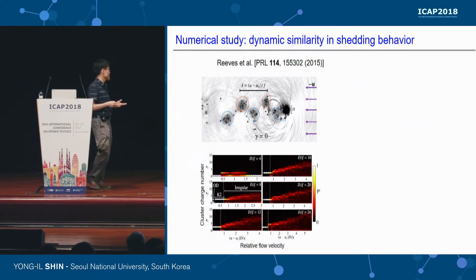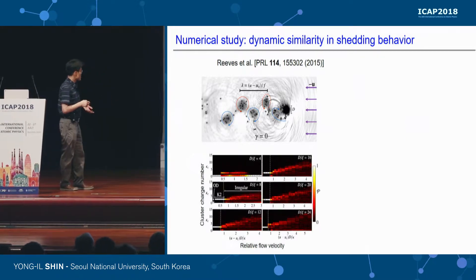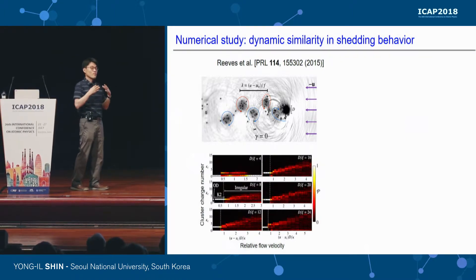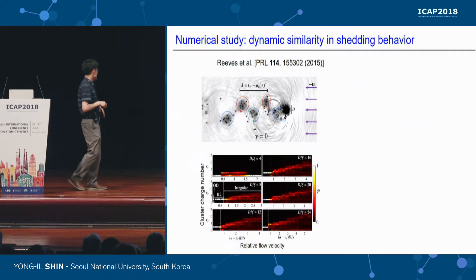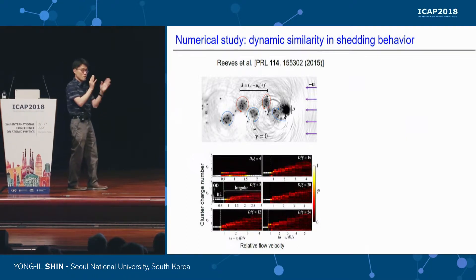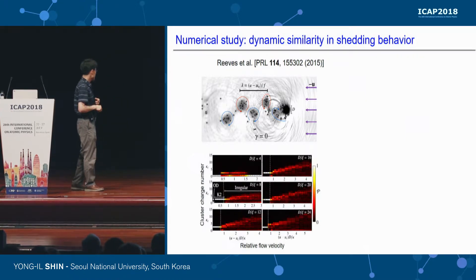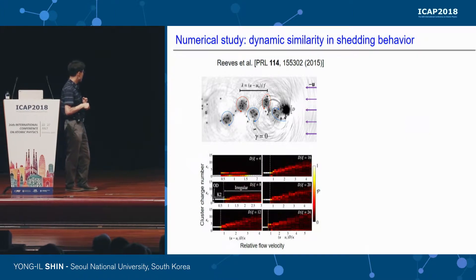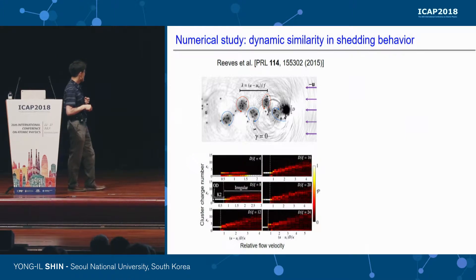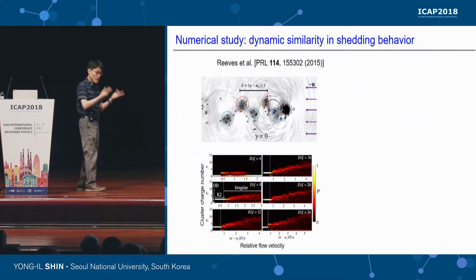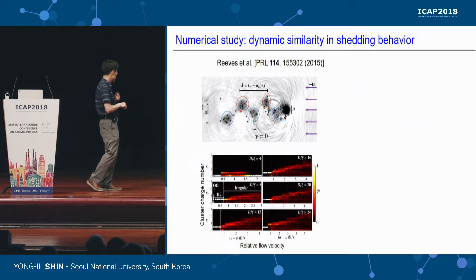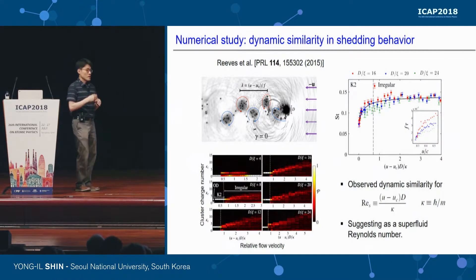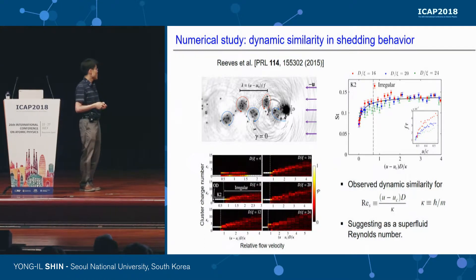The same behavior was observed by the Bradley group's numerical work in Australia. Furthermore, they observed that the vortex cluster shedding is maintained even at high moving velocity. They define a cluster charge number for the number of vortices inside one vortex cluster. At very low velocity the cluster charge number is two, very regular. For higher flow velocity, there is still periodic vortex cluster shedding, but the cluster charge number increases on average while becoming irregular, broadly distributed as two, three, five, or so.